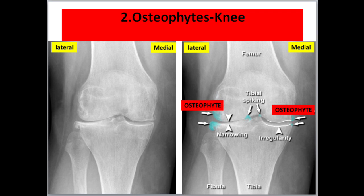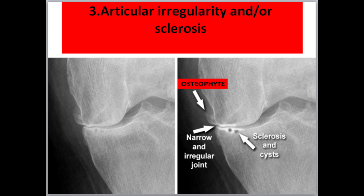Two: osteophytes. Our example here is at the knee, showing the formation of osteophytes — bone spurs — which is a common feature of osteoarthritis. This anteroposterior view of the knee shows osteophytes of the tibia and the femur, and small osteophytes have also formed at the tibial spines, which is called tibial spiking. The knee joint spaces are narrowed and irregular.